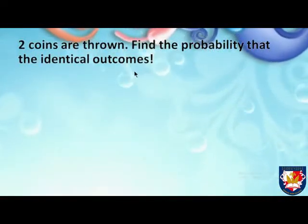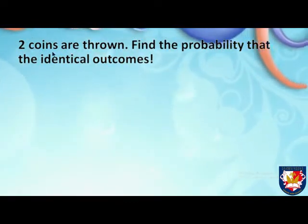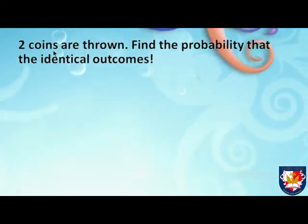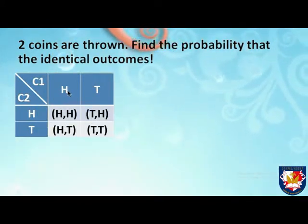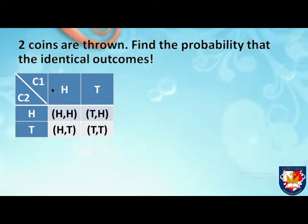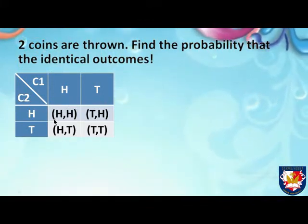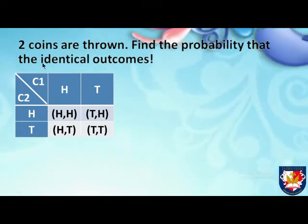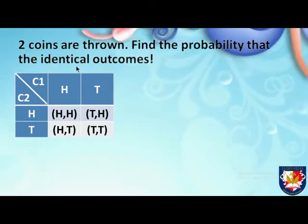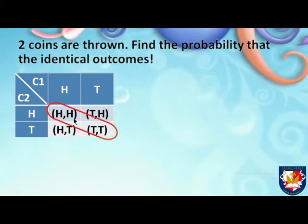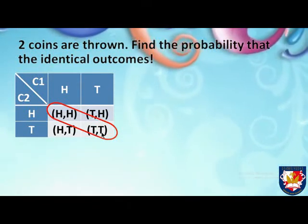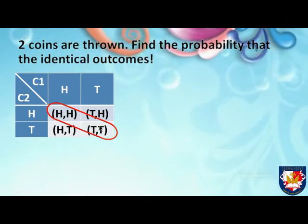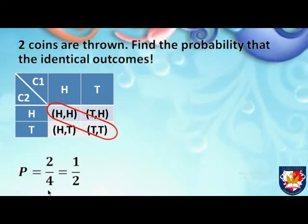Next example: two coins are thrown. Since this involves two processes, we need a probability diagram. The outcomes for the first coin and the second coin are listed, giving four total outcomes. The event asks for identical outcomes — meaning the same result on both coins. The favorable outcomes are head-head and tail-tail, so the probability equals two over four, or one over two.